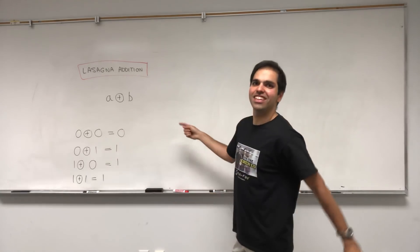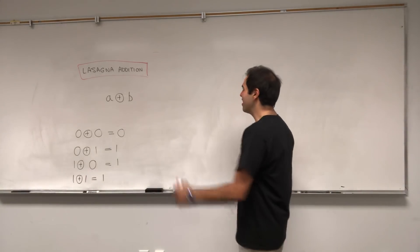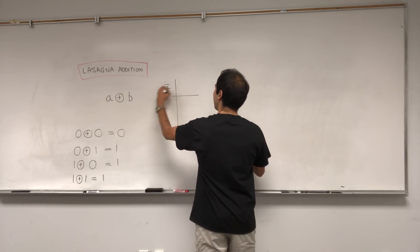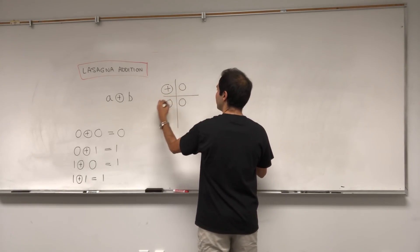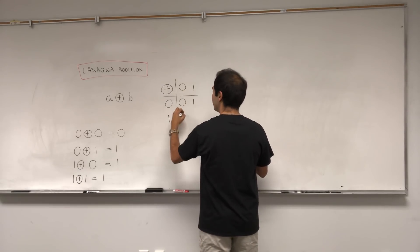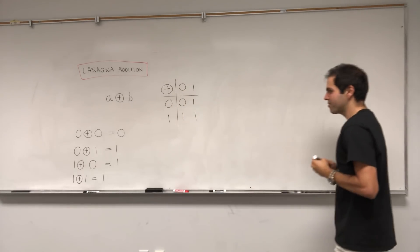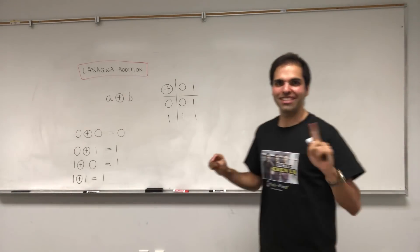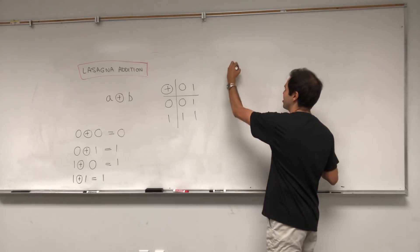So lasagna addition is this operation on the set {0, 1} with the following properties: 0 plus 0 equals 0, 0 plus 1 equals 1, 1 plus 0 equals 1, and 1 plus 1 equals 1. And the question is: what are its properties? It leads to a very interesting algebraic structure.